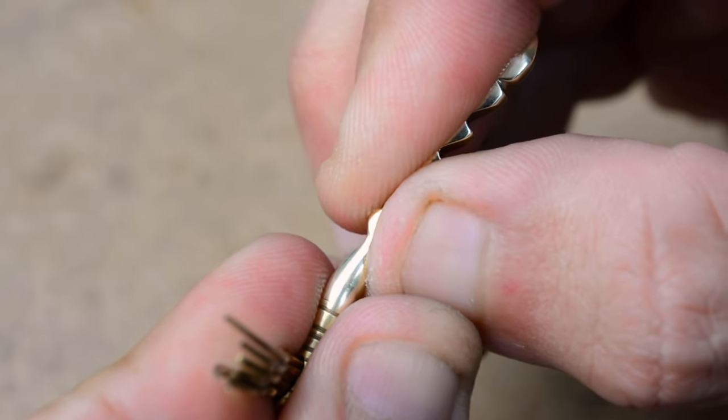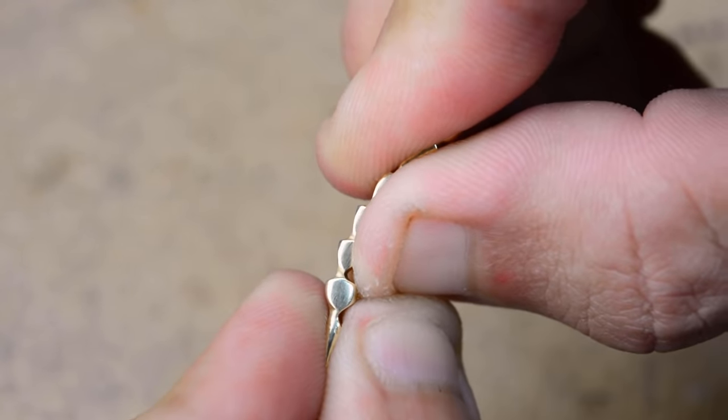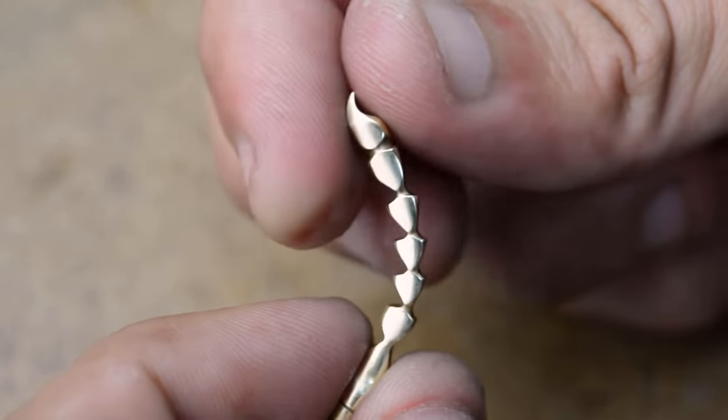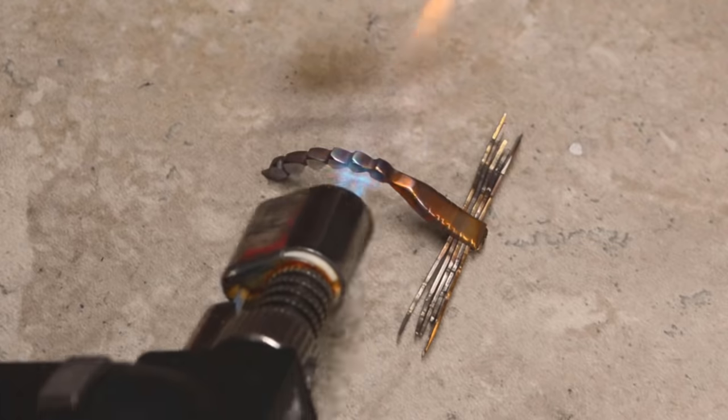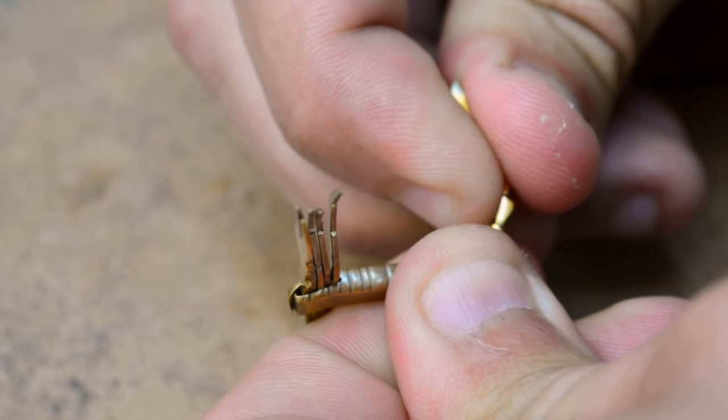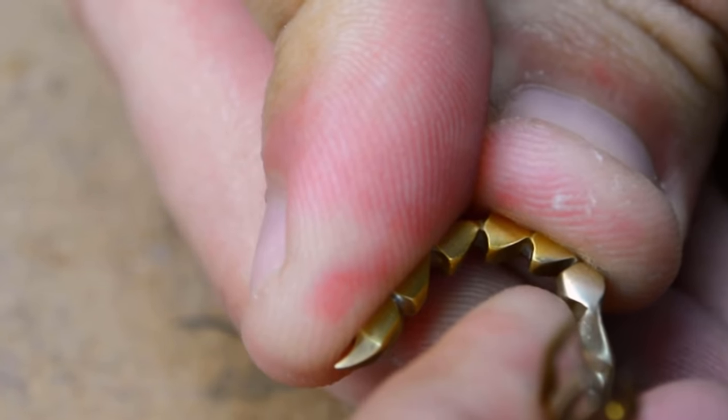I'd be lying if I said it didn't take me two days just to muster up the courage to bend this tail to shape. Terrified it would snap right off and then I'd have to make a crab or something. Anyway, a little heat does the trick to make the brass softer and easier to work with.